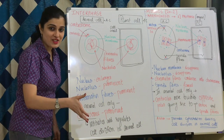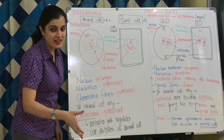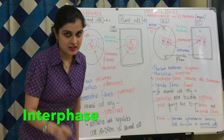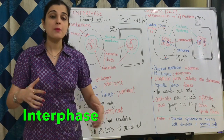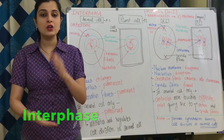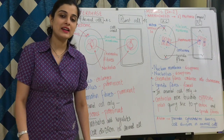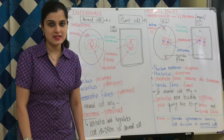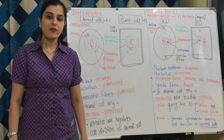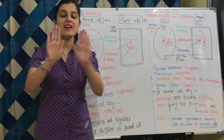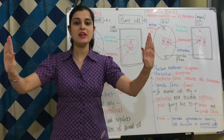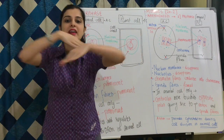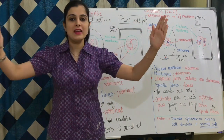Before the cell can enter into division phase, it obviously has to pass through something called interphase, in which the cell prepares itself to undergo division. What does it do? Protein synthesis, RNA synthesis, mitochondria replication. The very important thing is DNA replication — the DNA doubles up for equal distribution of genetic material in the daughter cells.